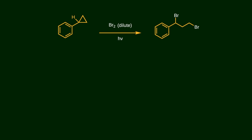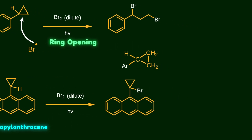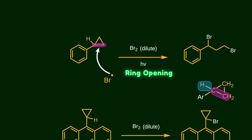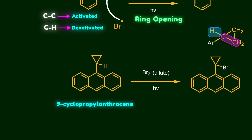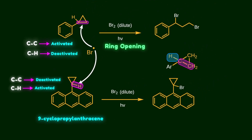Anti-periplanarity is not the only geometry that leads to orbital interaction — orbitals can interact in many different ways. Bromination of aryl-cyclopropane is a good example. When phenylcyclopropane reacts with bromine under radical conditions, the cyclopropane undergoes ring opening because the bromine radical attacks the cyclopropane ring. But when 9-cyclopropyl anthracene reacts with bromine under the same conditions, the cyclopropane ring remains untouched and the brominated product is formed without ring opening — it undergoes H-abstraction instead. The only way to rationalize this unique reactivity is a stereoelectronic effect.